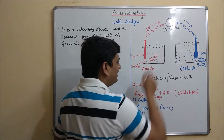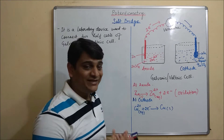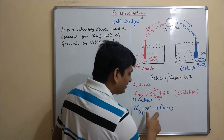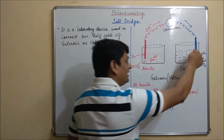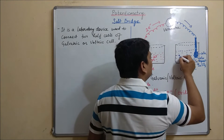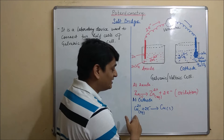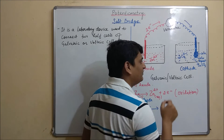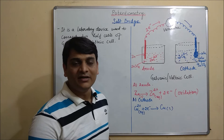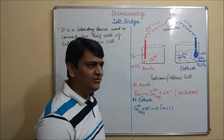At the anode, Zn²⁺ will be in excess, so this electrode will contain the maximum number of Zn²⁺ ions — that is, positive ions or cations. At the cathode, Cu²⁺ is converted into Cu metal and deposits onto the copper rod, causing SO₄²⁻ ions to be in excess. This ionic imbalance will prevent current flow. To neutralize that ionic imbalance, we have to use a salt bridge.